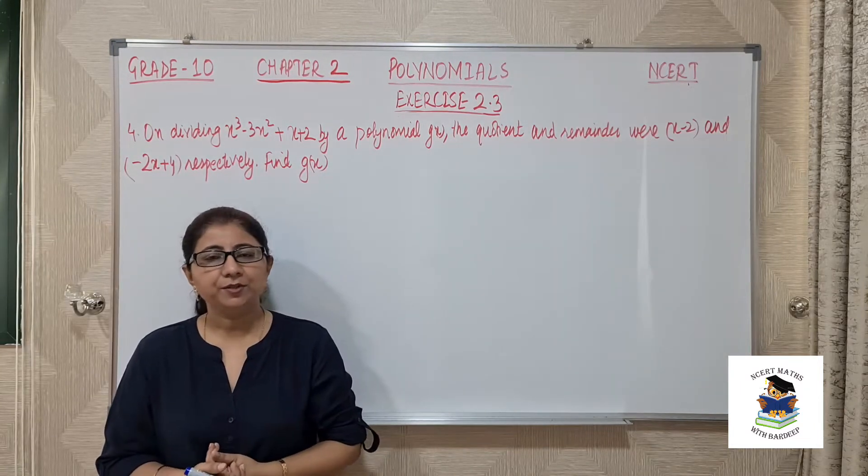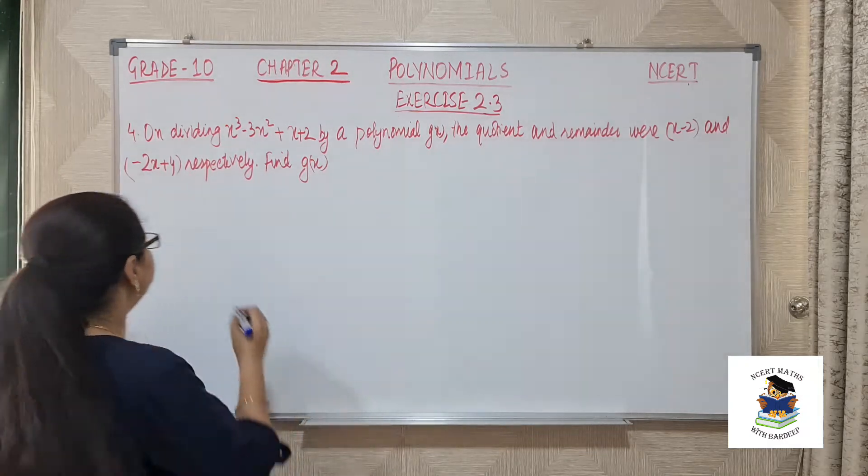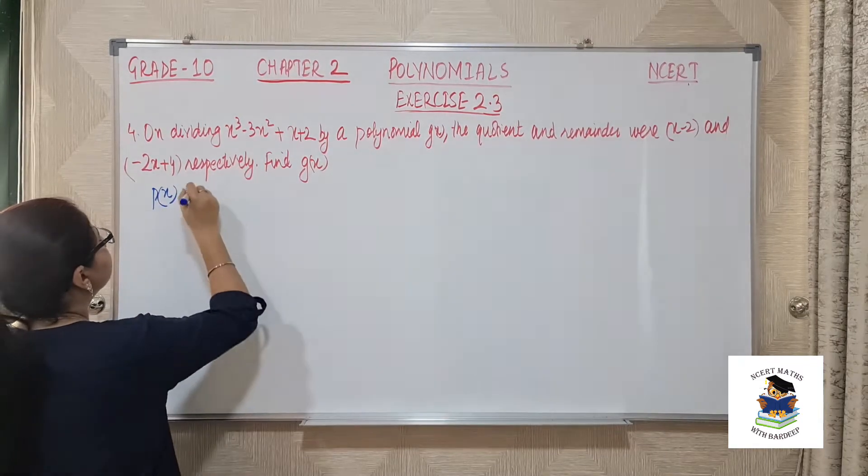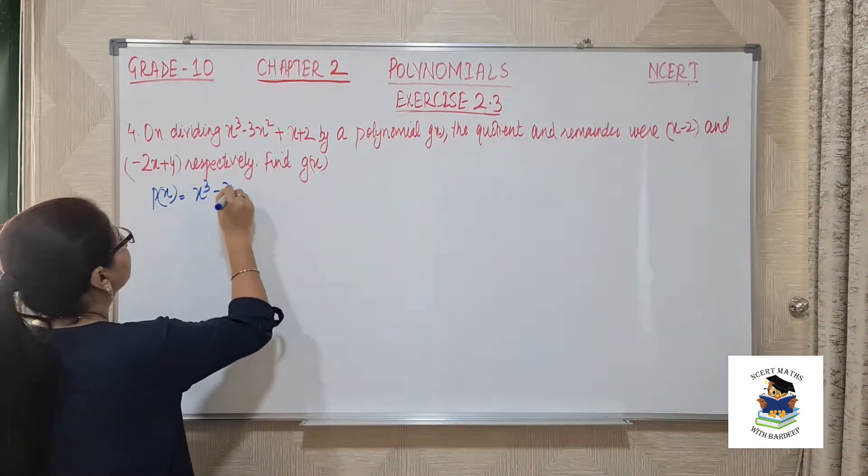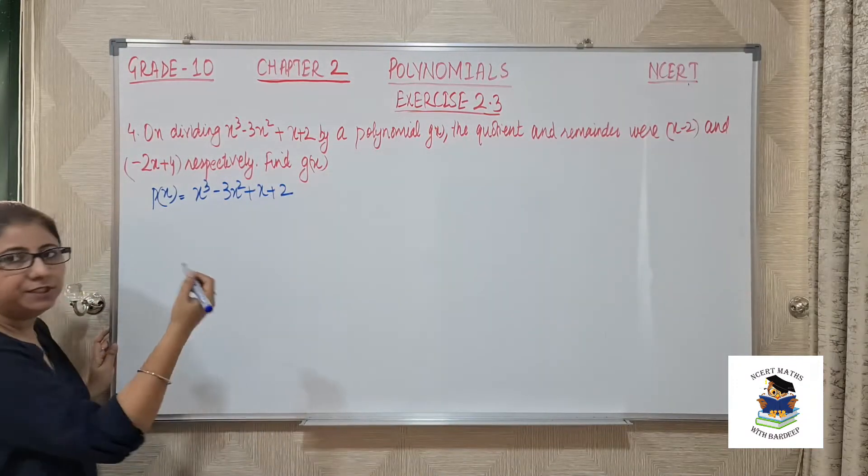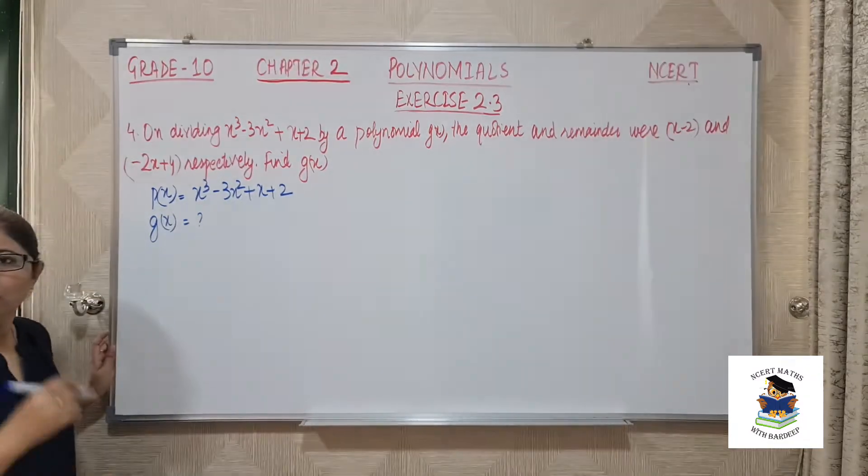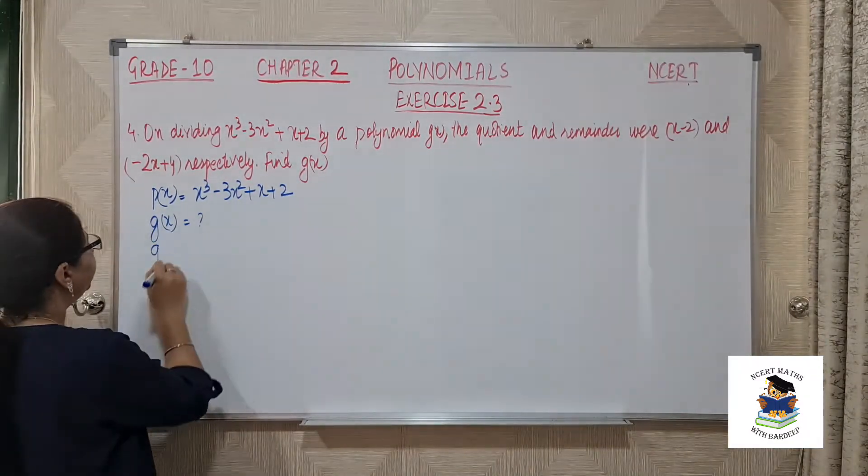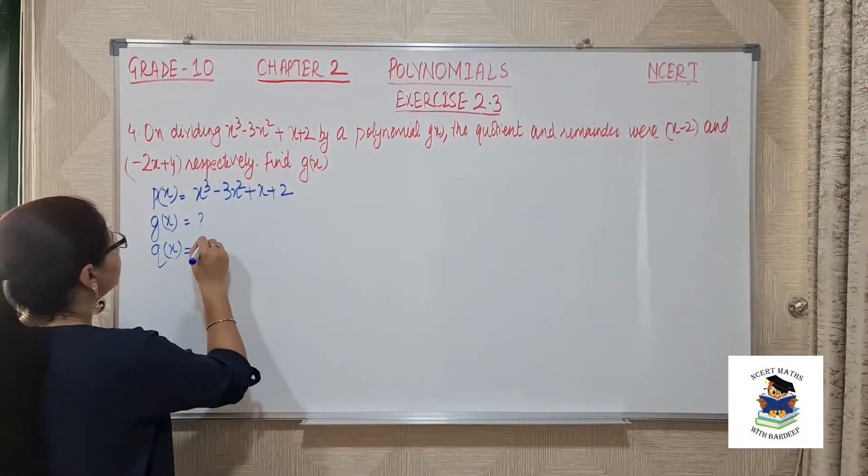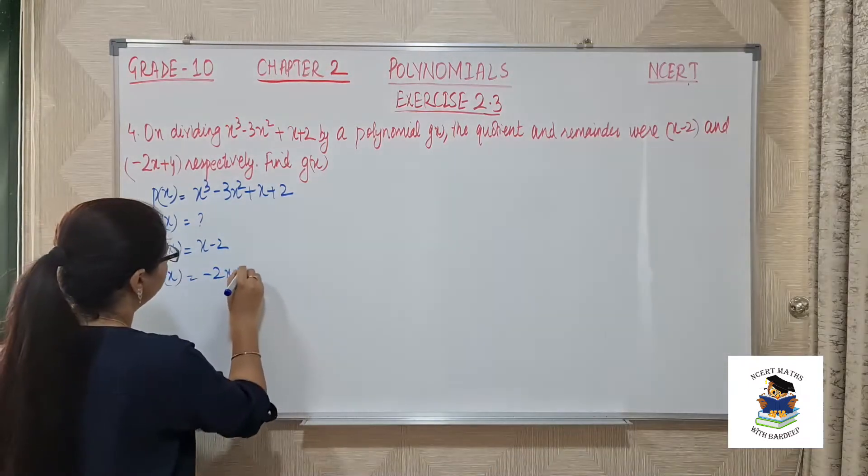This is again explained in the introduction video, what is division algorithm. We know that dividend, suppose px, is our given polynomial. Let us write this. gx is the divisor that we need to find. What is quotient? Let it be qx. This is given as x minus 2 and remainder is given as minus 2x plus 4.